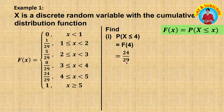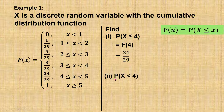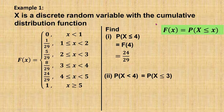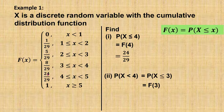So therefore, the answer is 24 over 29. Next, find the probability x less than or equal to 3. The probability P(X ≤ 3) is the same as the cumulative distribution function F(x) when x equals 3. Based on this cumulative distribution function, when x equals 3, the value is 8 over 29. So therefore, the answer is 8 over 29.